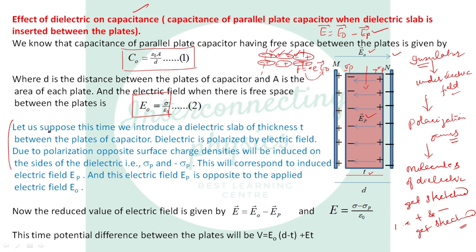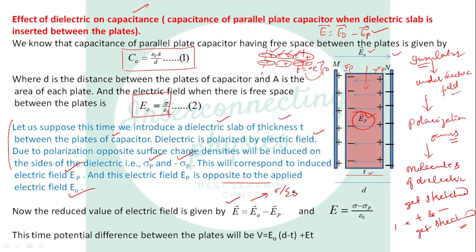Let us suppose we use a dielectric of thickness T between the plates of the capacitor. The dielectric is polarized by the electric field; due to polarization, opposite charge densities sigma_p and minus sigma_p develop on the sides of the dielectric, corresponding to an induced electric field E_p opposite to the applied field. The reduced value of electric field is E equal to E₀ minus E_p. If E₀ is sigma over epsilon₀, then E_p is sigma_p over epsilon₀, so E equals (sigma minus sigma_p) over epsilon₀.